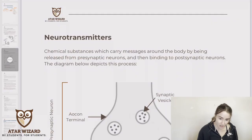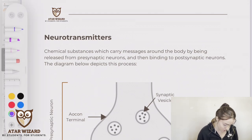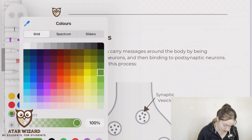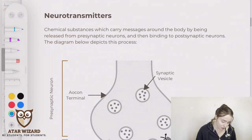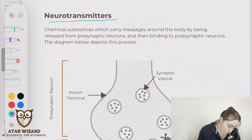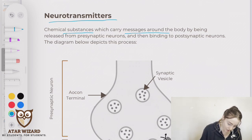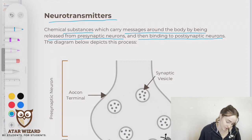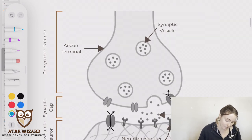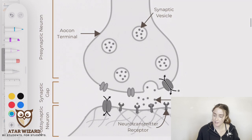First we're going to look at neurotransmitters. Neurotransmitters are chemical substances which carry messages around the body by being released from the presynaptic neurons and then binding to postsynaptic neurons. The diagram below depicts this process.